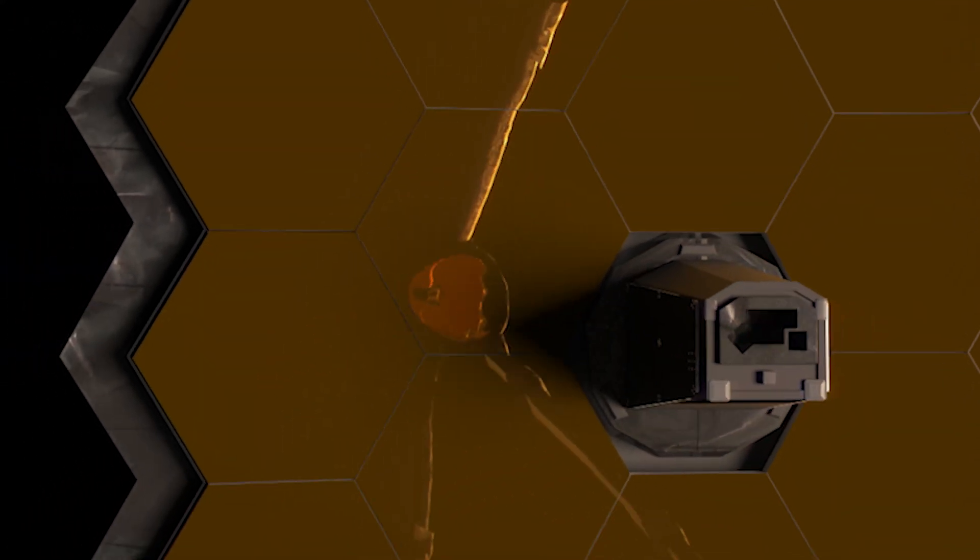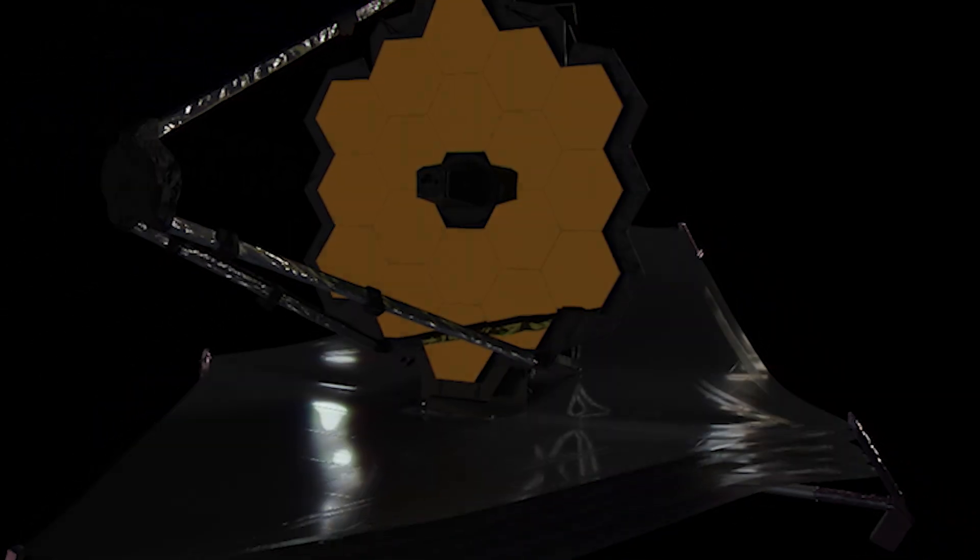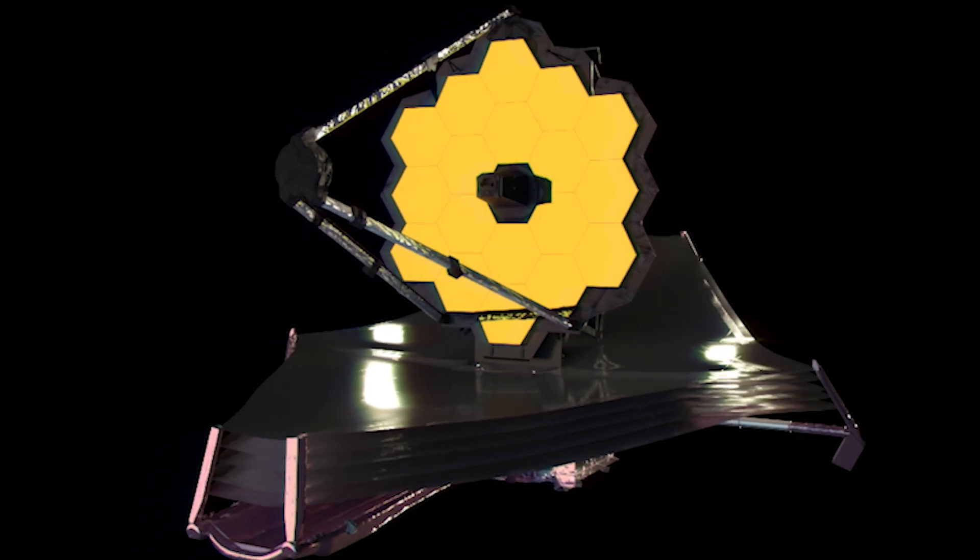That gives us some initial confidence that the alignment looks good, and that's a good starting point for doing the alignment of the telescope. We have now gotten some data looking through focus, and we've been able to see that we don't see any surprises in the shapes of the mirrors. So far so good, but we do have a long way to go.